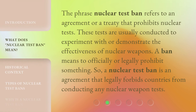The phrase Nuclear Test Ban refers to an agreement or a treaty that prohibits nuclear tests. These tests are usually conducted to experiment with or demonstrate the effectiveness of nuclear weapons. A ban means to officially or legally prohibit something. So, a nuclear test ban is an agreement that legally forbids countries from conducting any nuclear weapon tests.